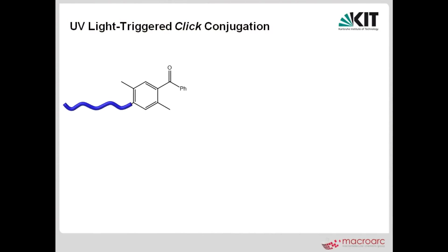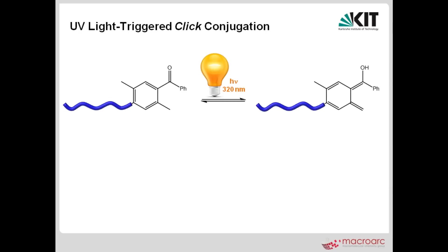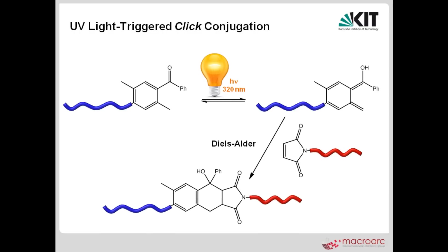Via irradiation with UV light, the dimer of the benzophenone end group enters an excited state and rearranges into the tautomeric dienol form. In the presence of an adequate dienophile, such as a maleimide-functionalized polymer, the photoenol undergoes a Diels-Alder cycloaddition forming the desired block copolymer.